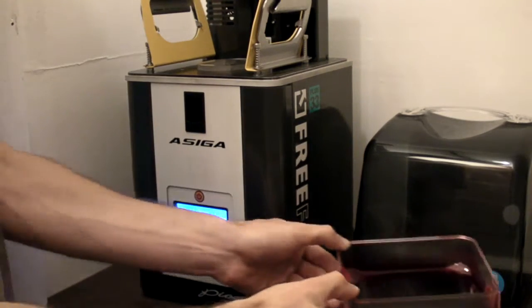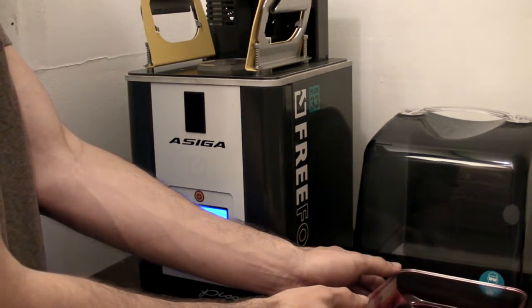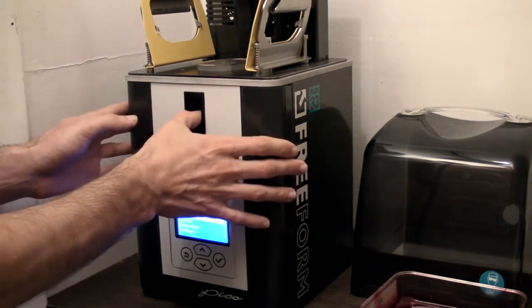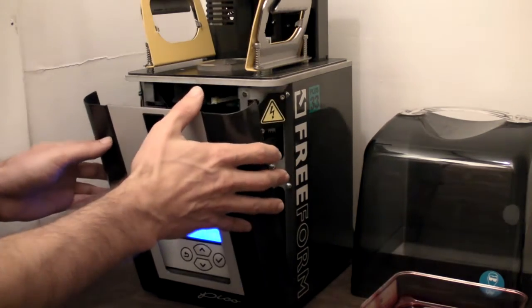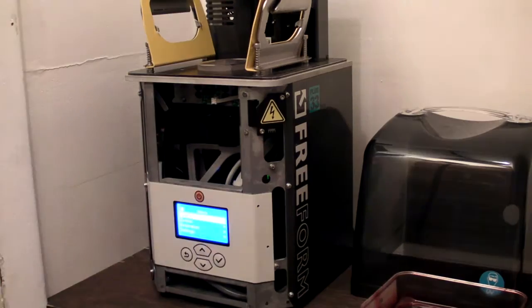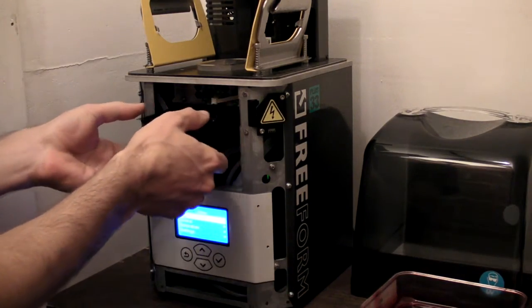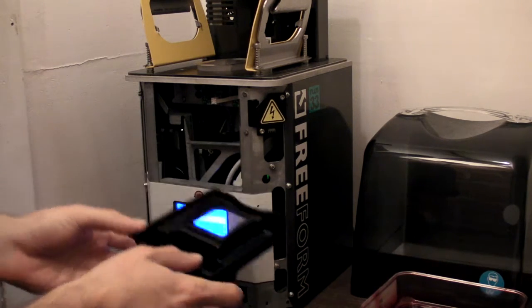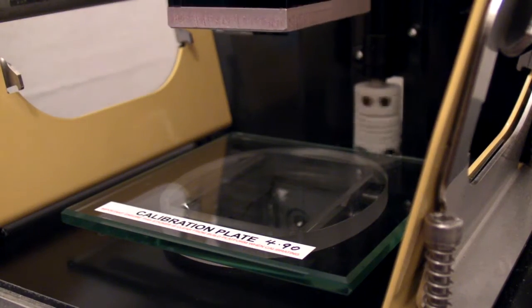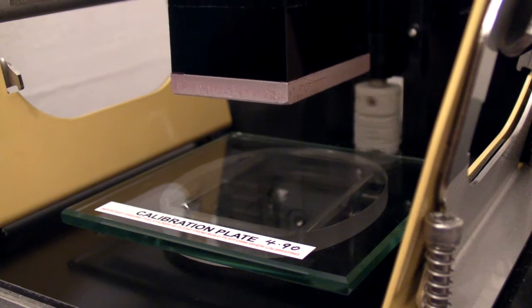There's not much to it as far as components and maintenance goes. There's the replaceable resin tray, and a safety tray below that which sits inside the machine to protect the projector. The only other removable component is the build platform, which you see lowering here for calibration.